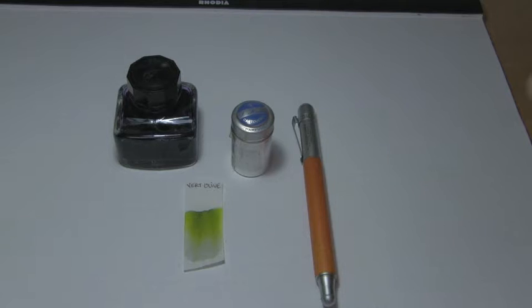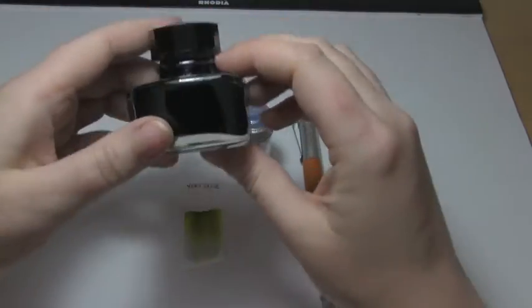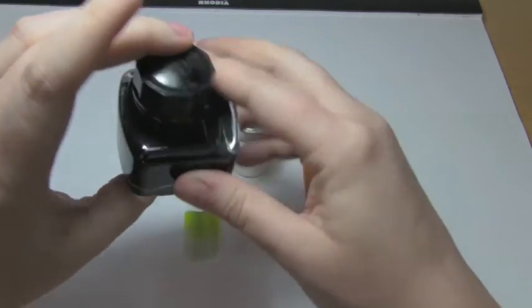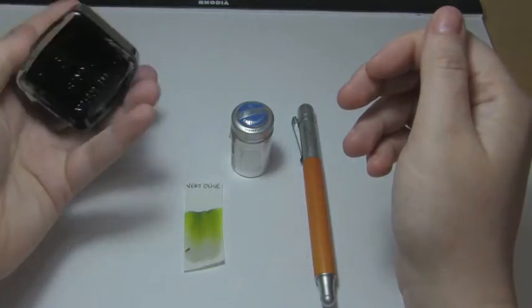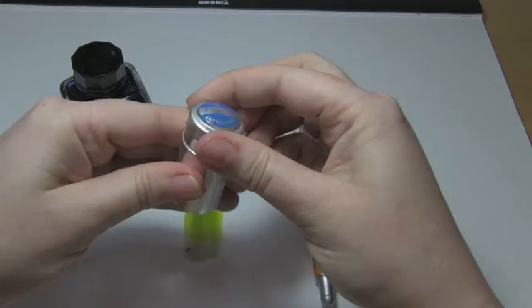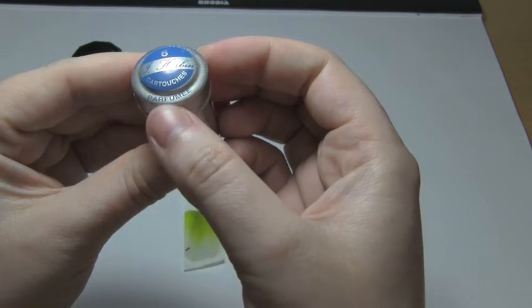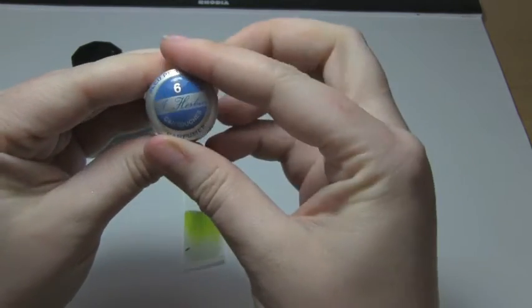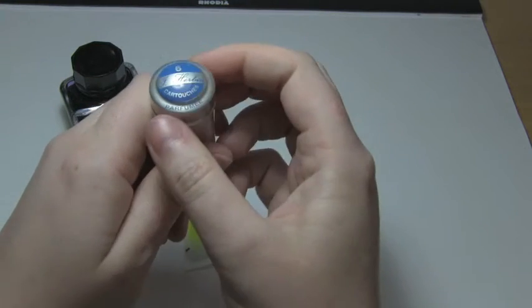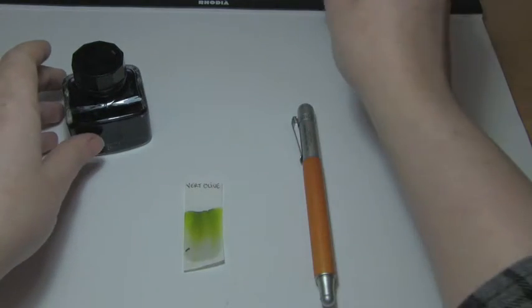Now today's ink is by J. Herbin, and when it comes in a bottle, it comes in a bottle rather like this. However I don't have this ink in a bottle, I generally buy it in cartridges, which come in these little tins like this. One of the funny things about the J. Herbin cartridges is sometimes, like this one, they're perfumed, so if you're extremely sensitive to smells like I am and you buy certain colors in cartridges, you want to make sure you check to see if they're perfumed, because you may get a nose full unexpectedly.